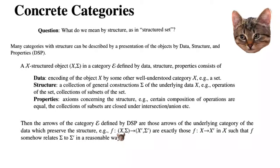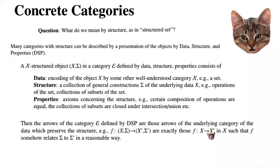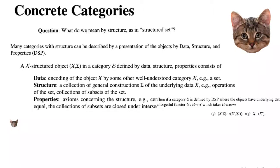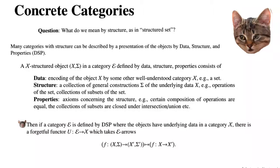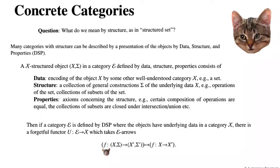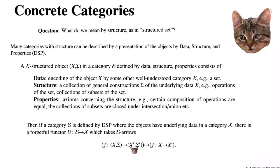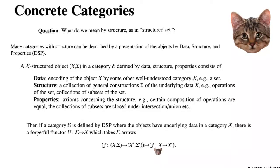So for example, a morphism F from the X-structured object X-sigma to another X-structured object X'-sigma' consists exactly of those arrows F: X → X' in X such that F relates the structure sigma to sigma' in a reasonable way. Then if a category E is defined by this data-structure-properties, where the objects have underlying data in a category X, there is a forgetful functor U: E → X which takes these E-arrows — F from X-sigma to X'-sigma' — to the underlying arrow in the category X.